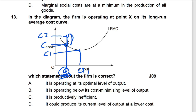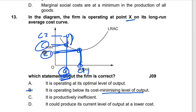If the firm were X-inefficient, average cost for output Q would be above point X on the curve. Option D — that it could produce its current level of output at lower cost — is also incorrect, as it cannot produce this output at a cost lower than C. So Option B is the correct answer: it is operating below its cost-minimizing level of output. The cost-minimizing level is Q1, and since the firm is at point X, its average cost could have been lower if output were at Q1.